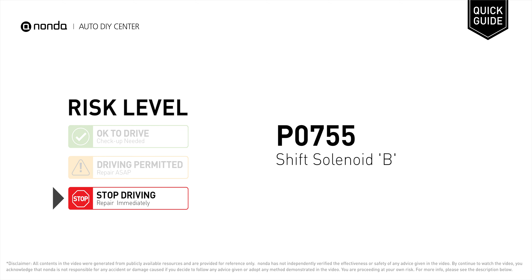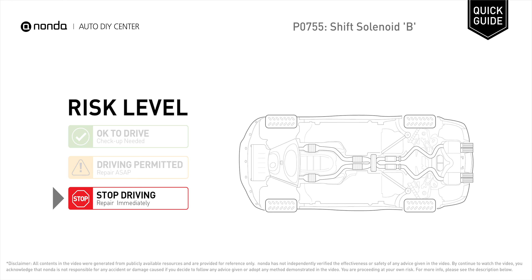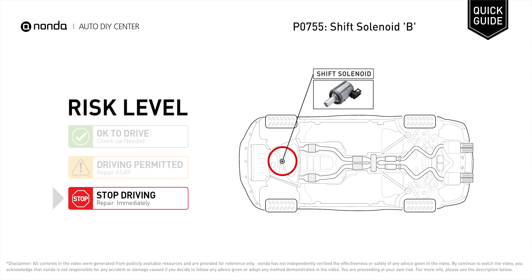P0755 is a diagnostic trouble code for shift solenoid B malfunction. Under this circumstance, stop driving and repair your vehicle immediately. It indicates that there is a problem with the transmission's shift solenoid B.